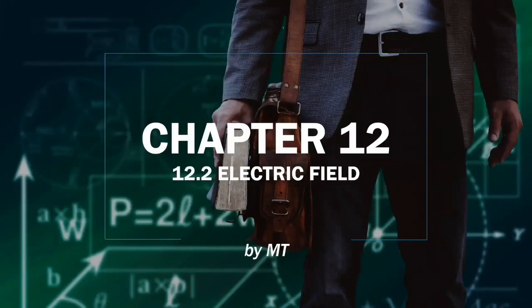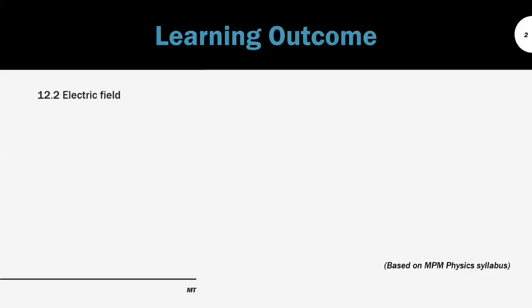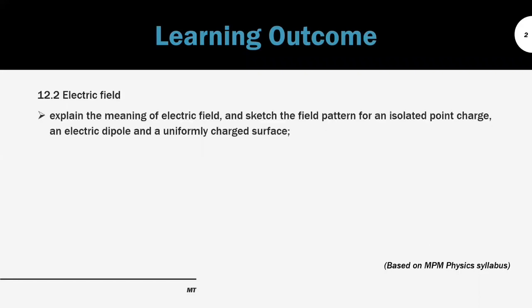Good day everyone and welcome back to my video. I'm going to explain about chapter 2.2, Electric Field. At the end of this video, students should be able to explain the meaning of electric field and sketch the field pattern for the point charge, electric dipole and also the uniformly charged surface.